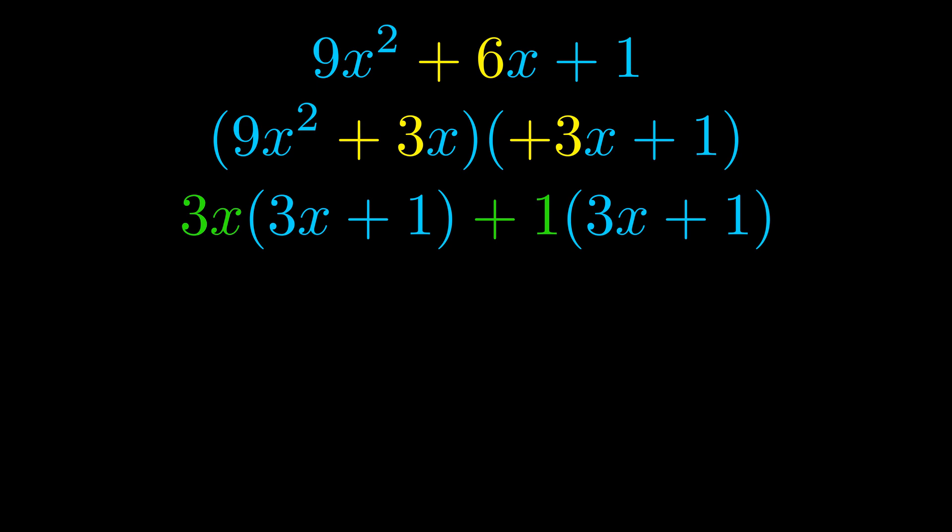Notice also how what remains inside of the parentheses is the same in both cases. The blue values are the same. Those blue values will become one of our factors and we will combine the two green values, the GCFs that we pulled out, to get the other one. And that is our fully factored equation.